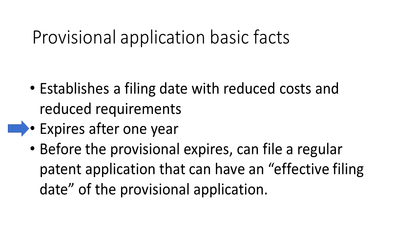The provisional patent application is in effect for one year and then it expires. Before it expires the inventor can file what's called a regular utility patent application that can have an effective filing date of the previously filed provisional patent application. If the inventor decides not to file a regular patent application then that provisional patent application becomes abandoned and is never made available to the public.